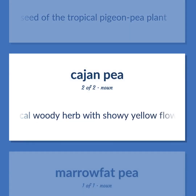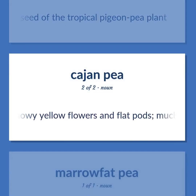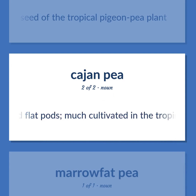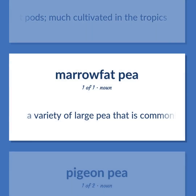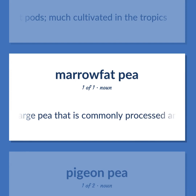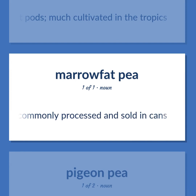Tropical woody herb with showy yellow flowers and flat pods, much cultivated in the tropics. A variety of large pea that is commonly processed and sold in cans.